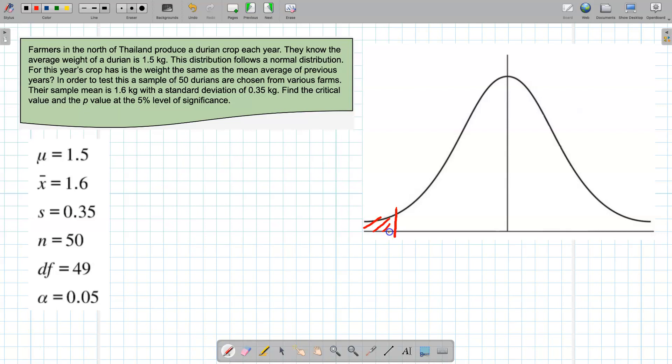We've got what's called a two-tailed test because there are two tails to the t-distribution. Now we're testing at the 5% level of significance. I've written everything out here, just a reminder we have the mean, the sample mean, the sample standard deviation, the number in the sample, the degrees of freedom which is one minus the number in the sample, and this is my significance level.